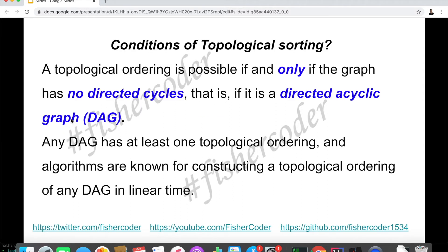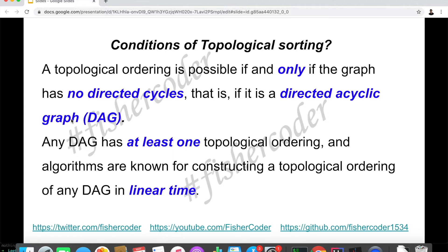Any DAG has at least one topological ordering, and there are algorithms known for constructing a topological ordering of any DAG in linear time. There could be multiple valid topological orderings. Today we'll go through one of the algorithms, which is Kahn's algorithm, invented by a computer scientist in 1962. There is also a DFS (depth-first search) approach — if you want to study that, stay tuned for another video — but today we'll focus on Kahn's algorithm.